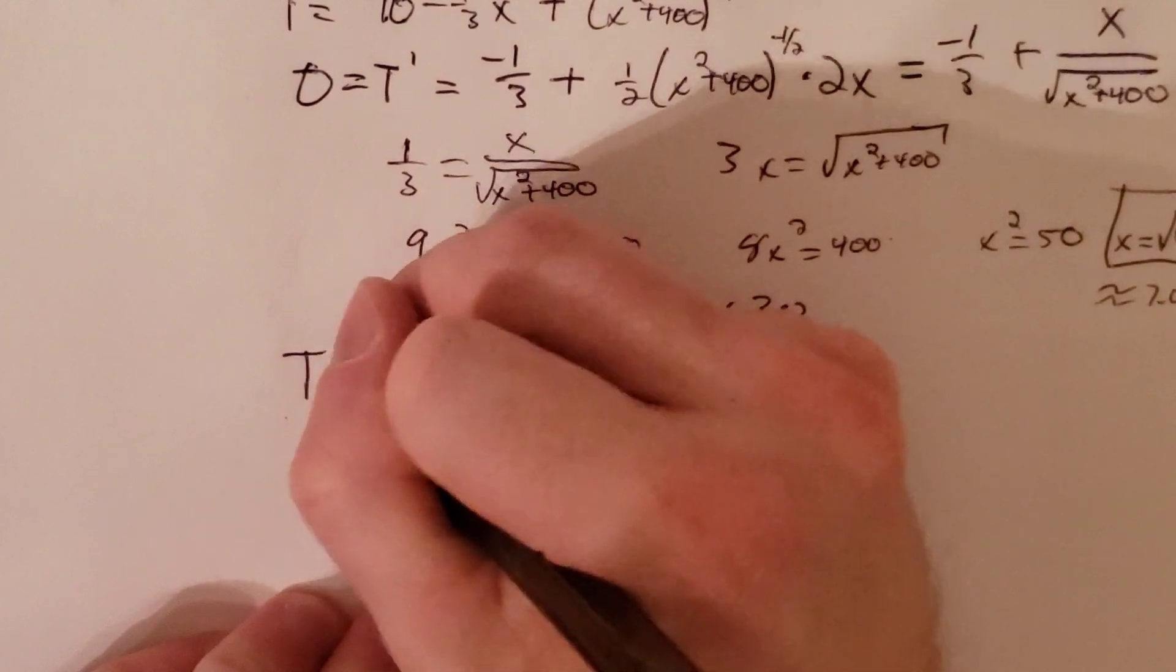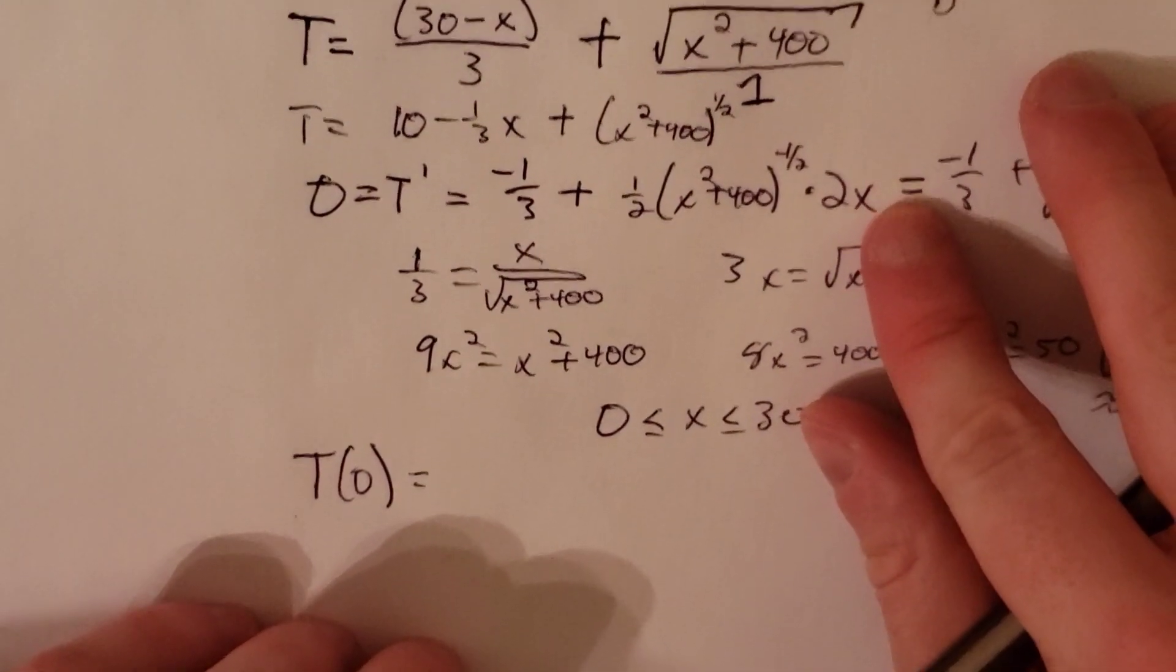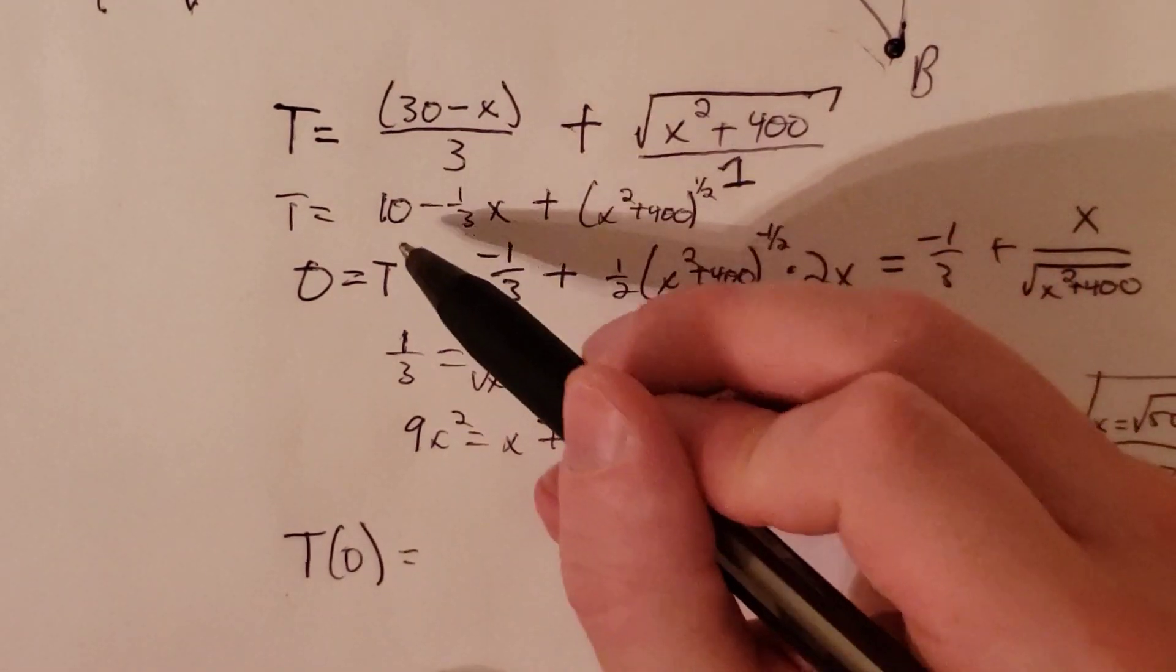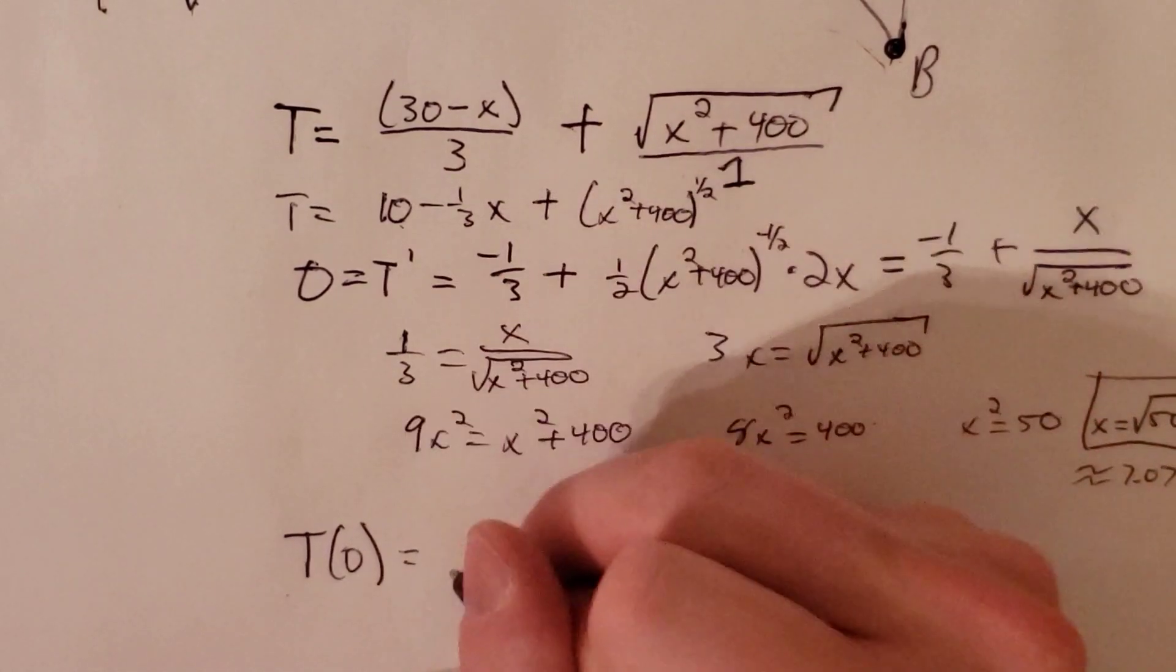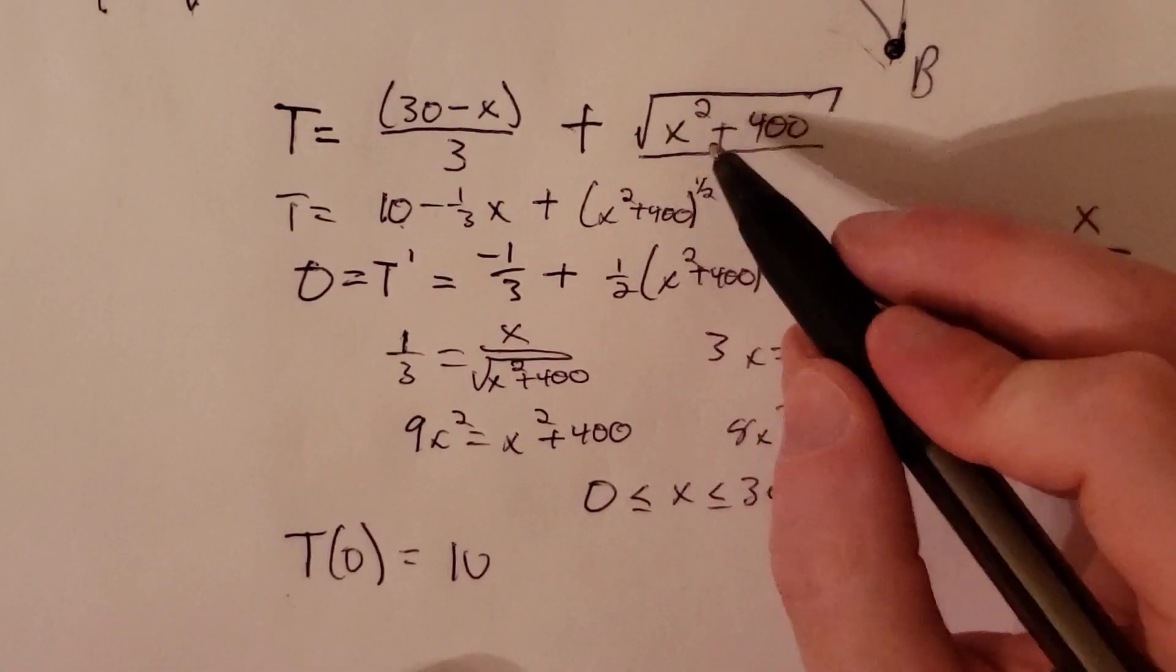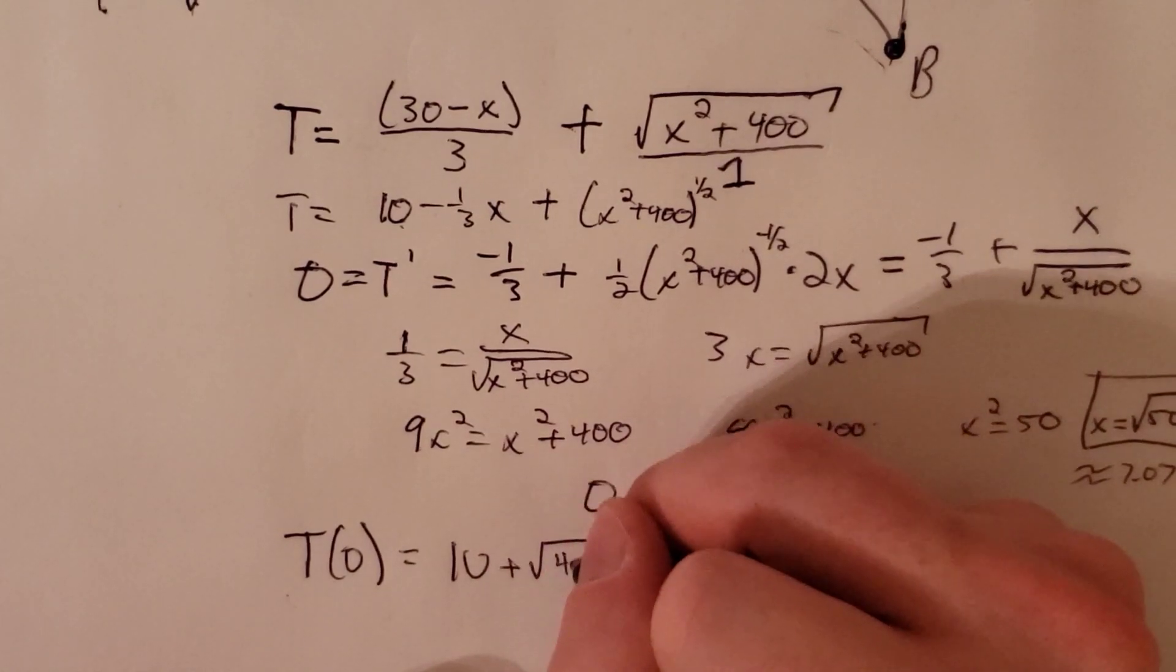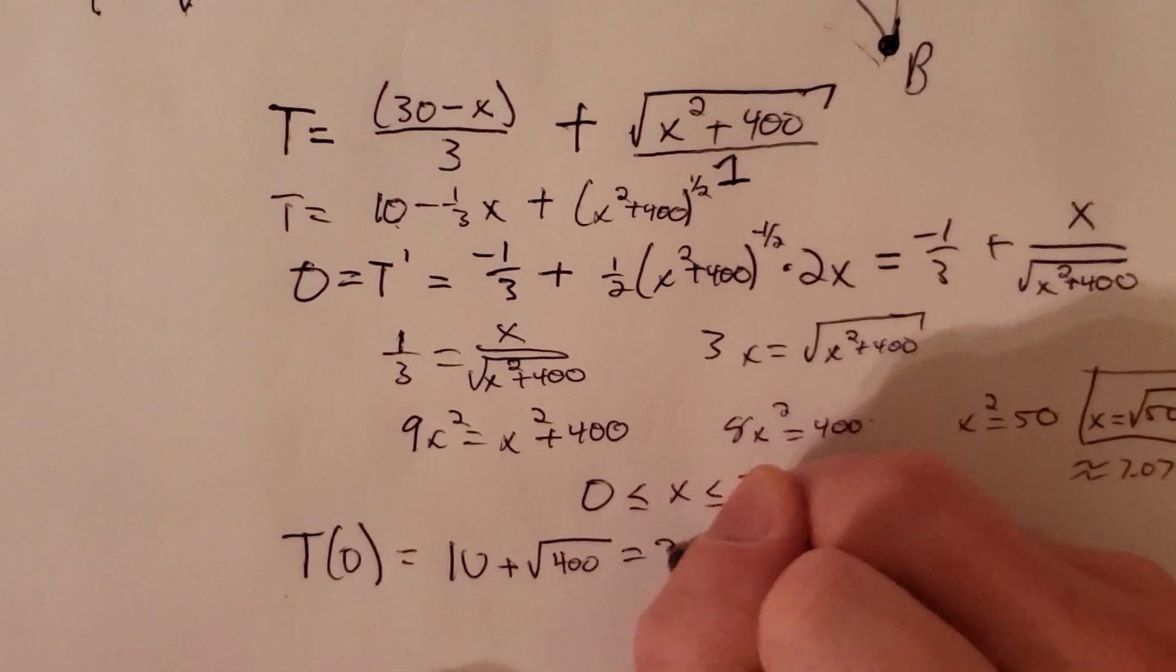All right, what is T of 0? What is our original function up here? We get 10 minus one-third times x. If x is 0, this is just 10. If x is 0, we get plus the square root of 400, which is 20. So we get 30.